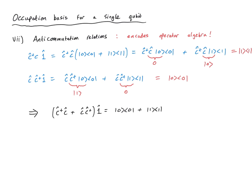Let's consider now c c-dagger acting on the identity operator, where I've switched the order of the operators. I proceed in exactly the same way: c c-dagger acting on the zero projector plus c c-dagger acting on the one projector. In the first term, this will give me the one state: c-dagger creates an electron in the empty state giving the one state, and then c acting on the one state gives us back zero — overall giving a projector onto the zero state. In the second term, the Pauli principle tells us that I cannot create another electron if the orbital is already occupied, so that gives zero. So let's simply add up these two results. On the left-hand side, c-dagger c plus c c-dagger, factorising out the identity operator. On the right-hand side, the projector onto zero plus the projector onto one — which is the definition of the identity operator. This tells us that the anticommutator of c-dagger and c is equal to one — or more correctly, the identity operator.